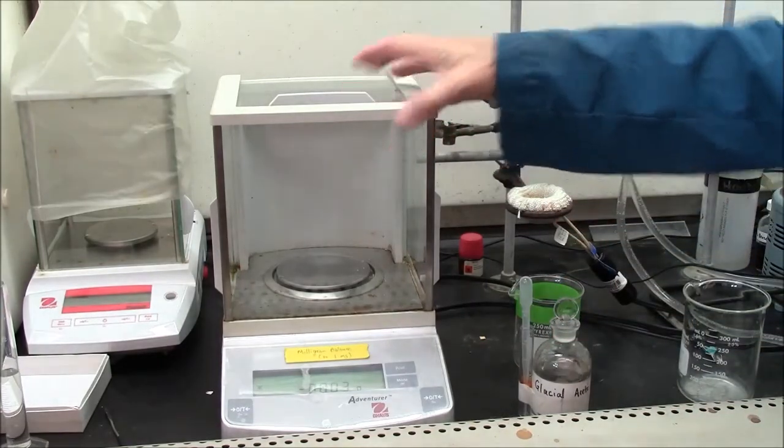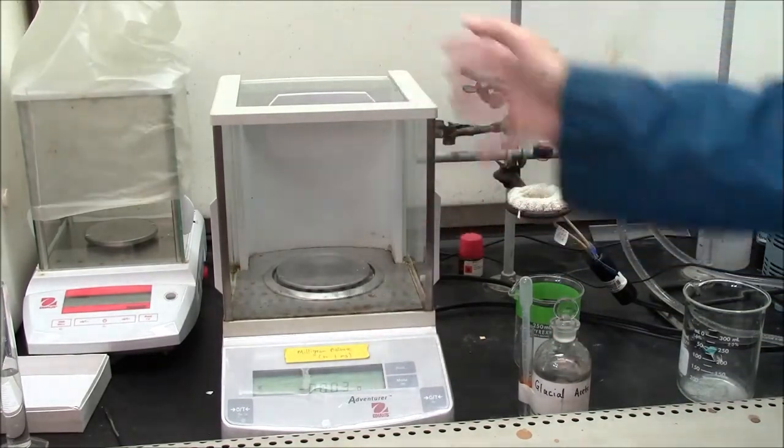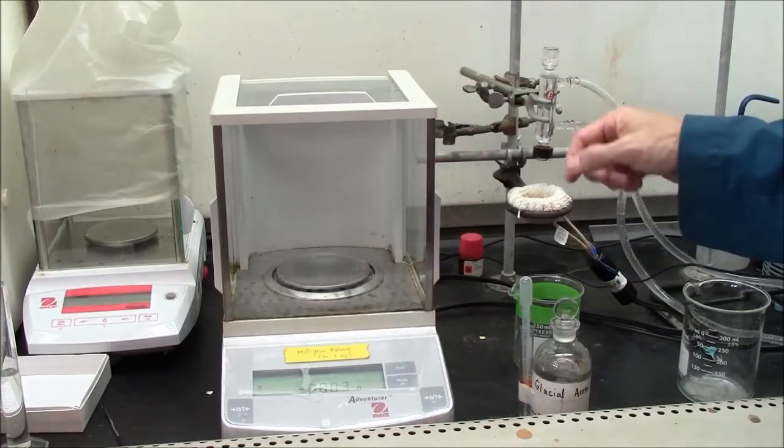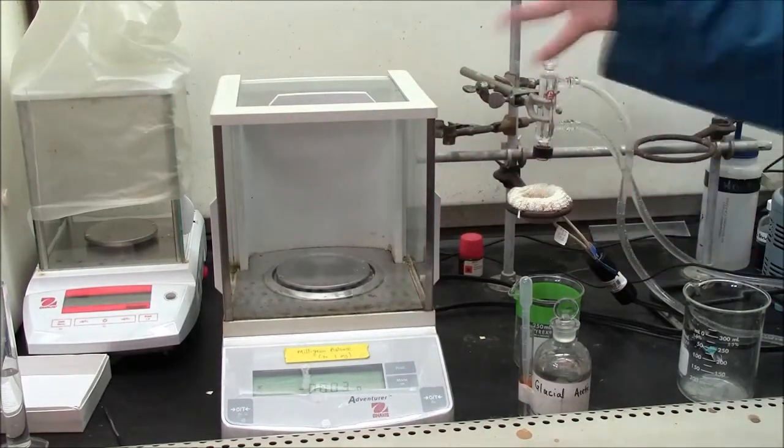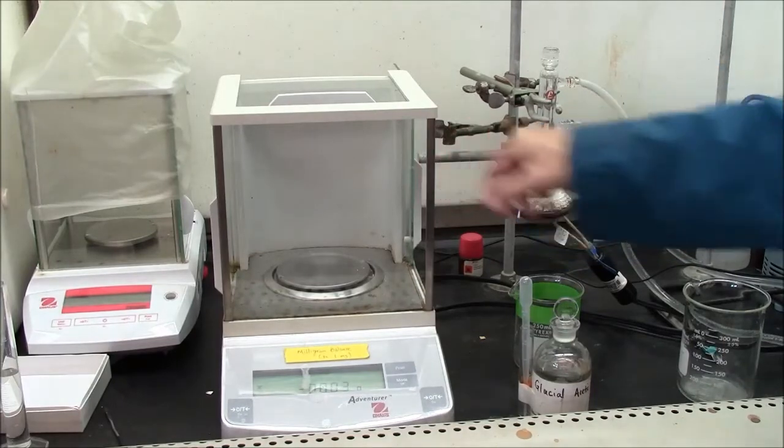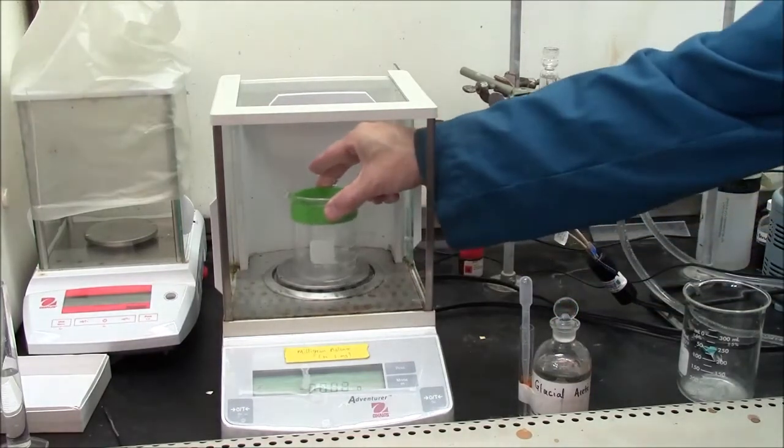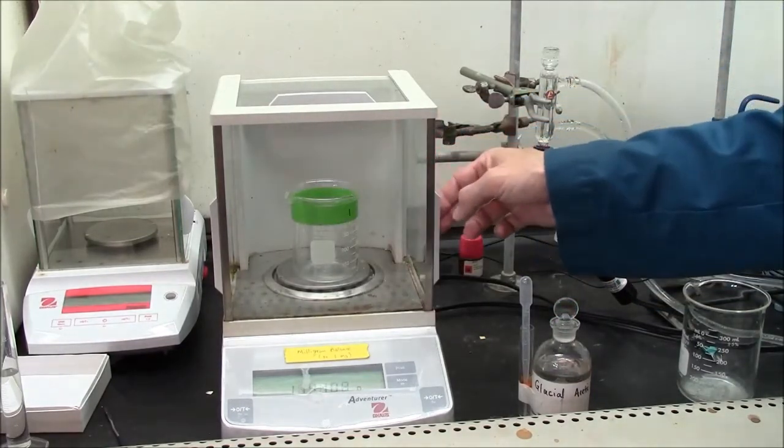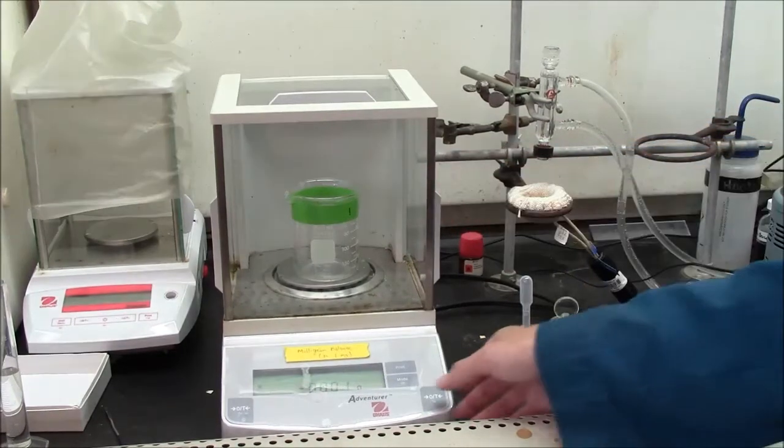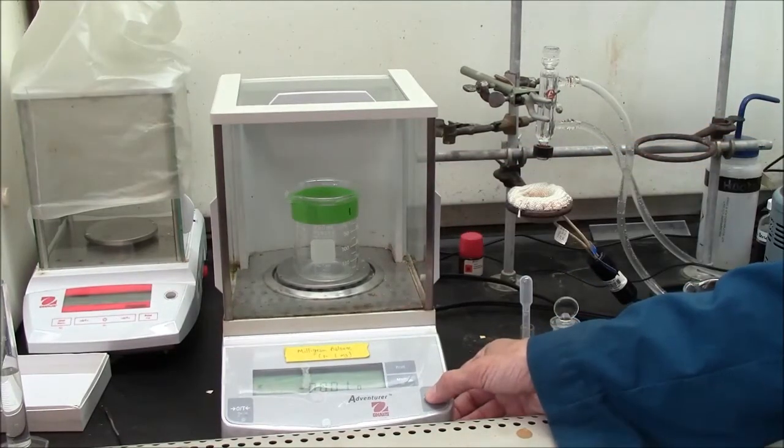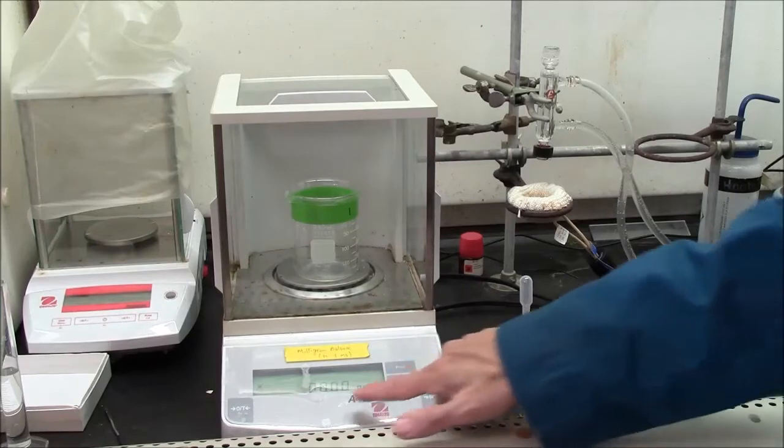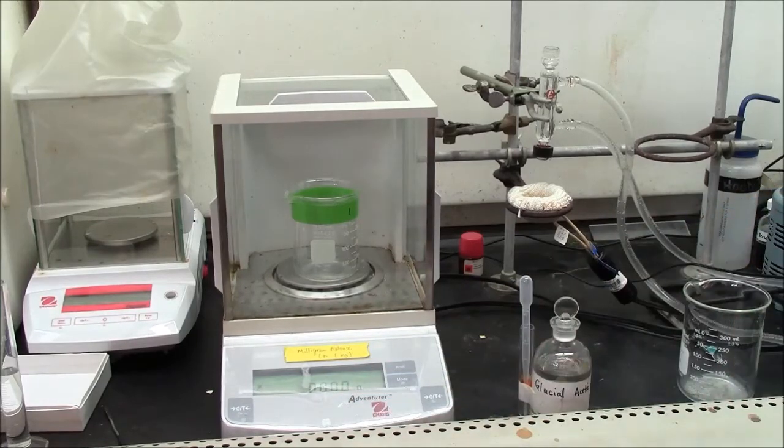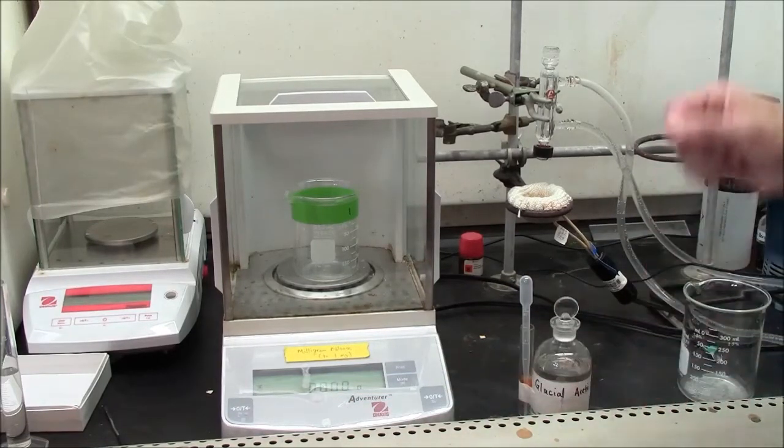You'll use this balance. It has draft shields around the platform. This protects it from air currents. You'll need to open a door and put your beaker on the platform. Close the door. Zero the beaker. This now reads zero. It has one more decimal place than you're used to.